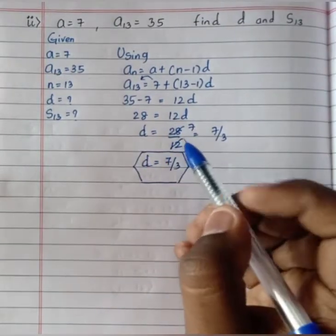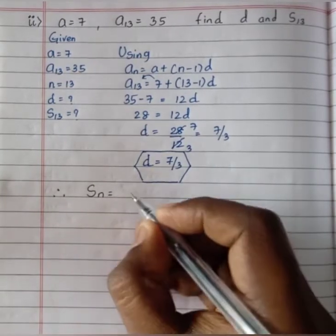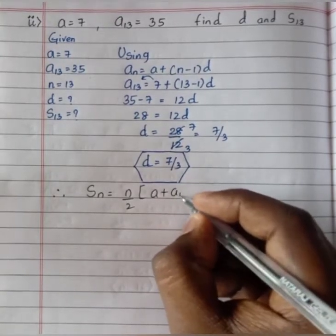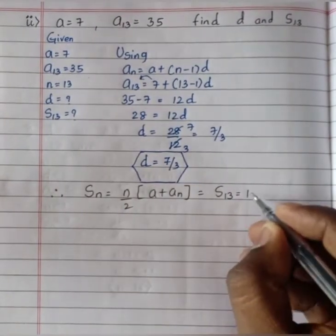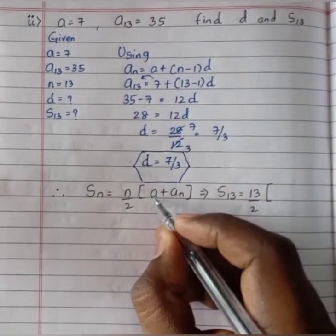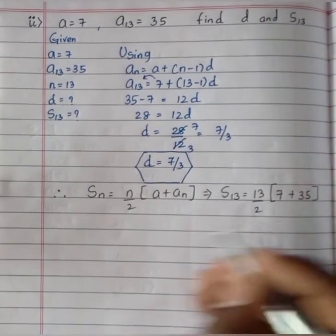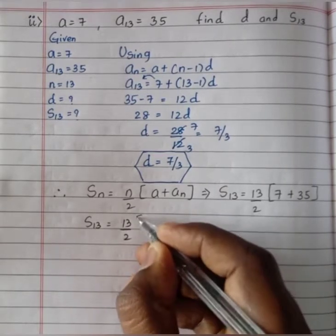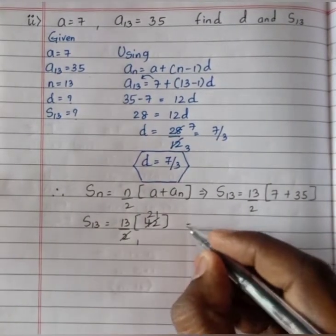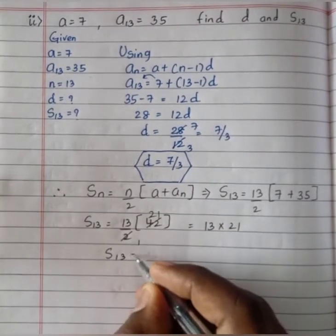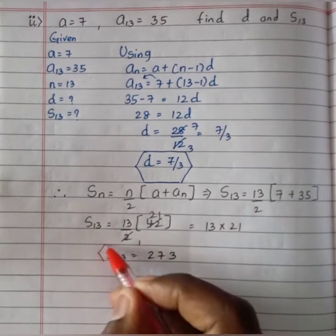Now using the sum formula Sn equals n divided by 2 into a plus an, we will find the sum of 13 terms. S13 equals 13 divided by 2 into 7 plus 35. Since 7 plus 35 is 42, and 42 divided by 2 is 21, we get S13 equals 13 times 21 which equals 273. The sum of 13 terms is 273.